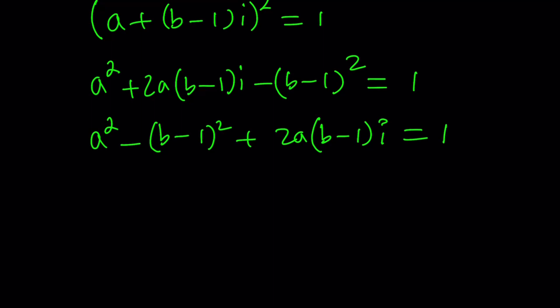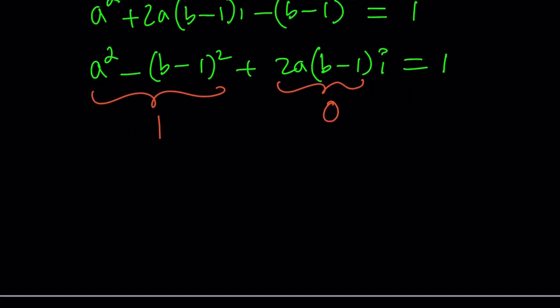Now we have complex numbers on both sides. Therefore, we can set the real part equal to one and set the imaginary part equal to zero because there is no i on the right hand side. From here we get a system of equations. Let's work with the second one first.